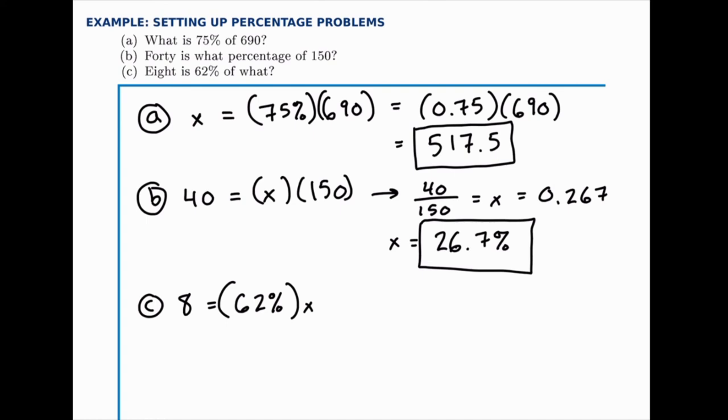we should write 62% as a decimal. Because remember that every time we do a calculation, we should have decimals in the calculation instead of percentages. Percentages are meant for displaying the number, not for doing calculations. So, first we'll write this as 8 equals 0.62 times x.